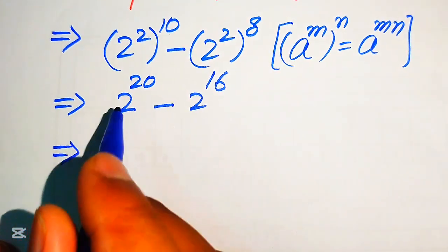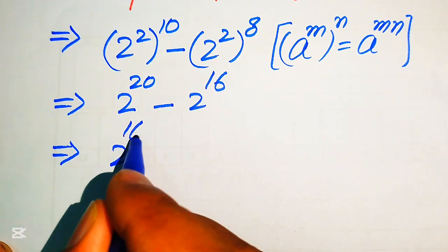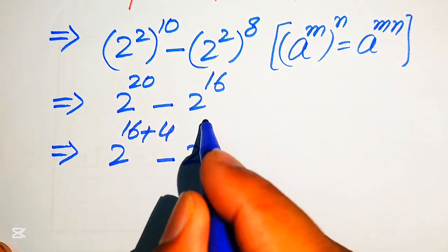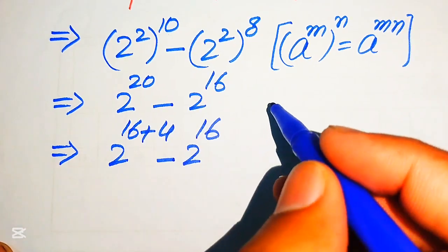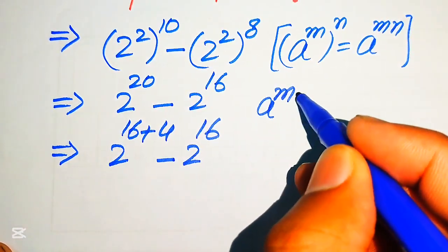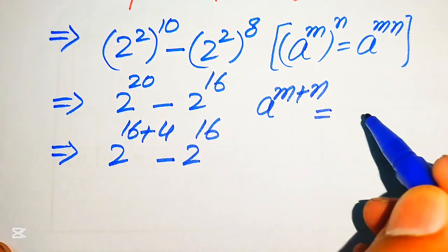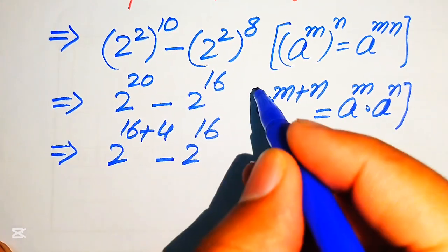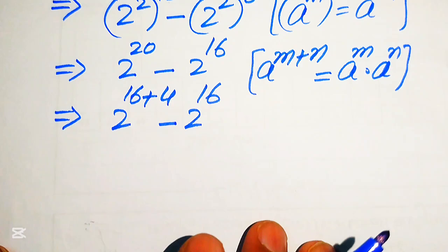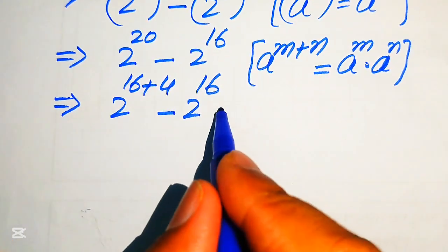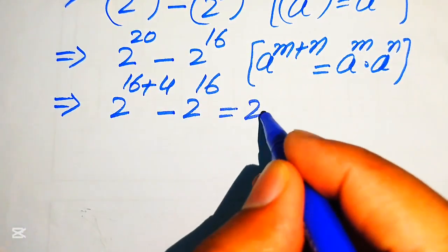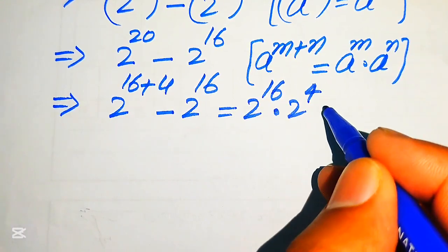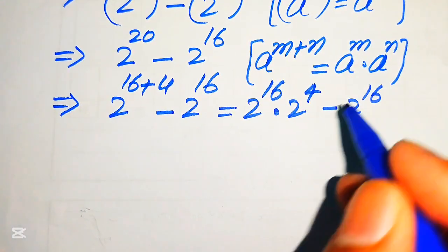Now in the next step, we break 20 as 16 plus 4, so we have 2 to the power of 16 plus 4, minus 2 to the power of 16. Here we apply the exponent law again: if you have a to the power of m plus n, it equals a to the power of m multiplied by a to the power of n. According to this law, we break the exponent and it is written as 2 to the power of 16 multiplied by 2 to the power of 4, minus 2 to the power of 16.